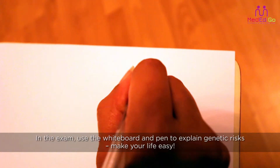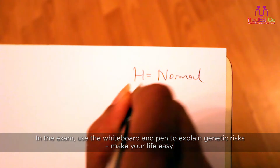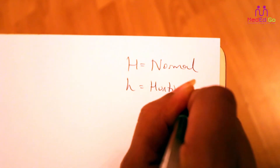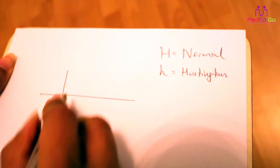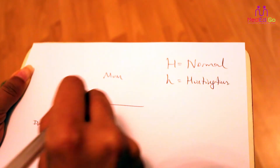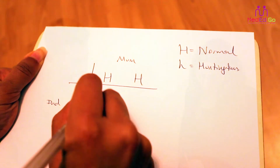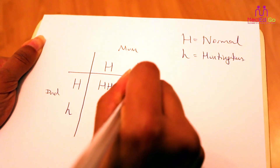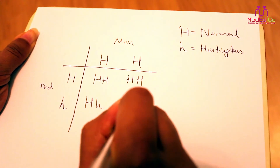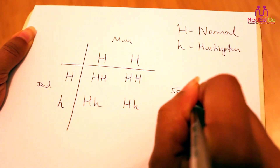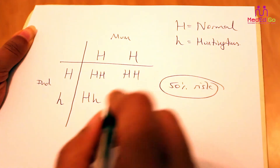I'm just going to show you on the grid here. Imagine this is a normal gene and that is the Huntington's disease gene. Your mum, who you said is completely fine, has probably got two normal genes. Now your father has one normal gene and one Huntington's disease gene because he's got the condition. When we put it together — one gene from mum and one gene from dad — that gives a normal child. But equally, one gene from mum and the Huntington's disease gene from dad shows there is a 50% chance that you could have Huntington's disease.